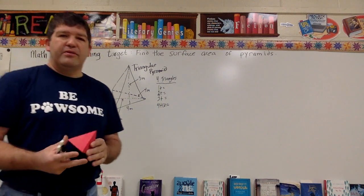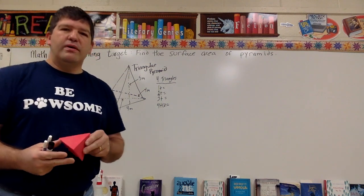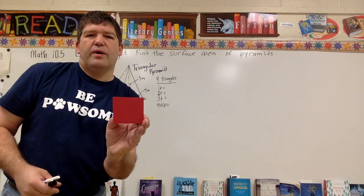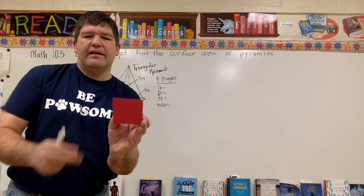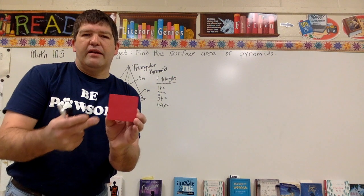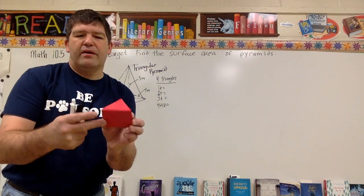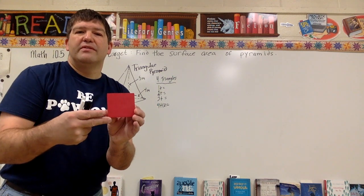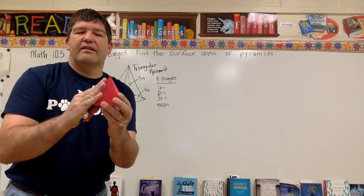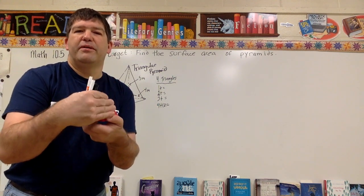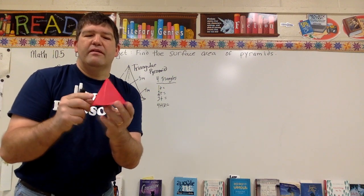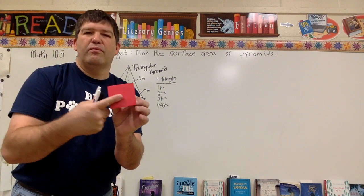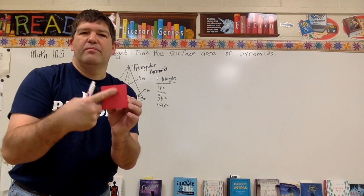We're going to be dealing with two types of pyramids. One is a pyramid that has a square base — it sits on a square, so you'll need to find the area of that square. Because it's a square it has four sides, and when something has four sides it's going to have four walls to the pyramid. So you'll have four triangles and one square or parallelogram.